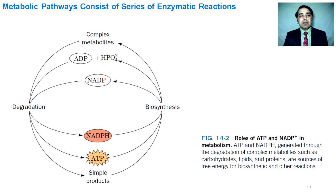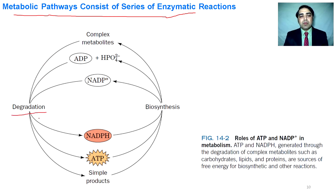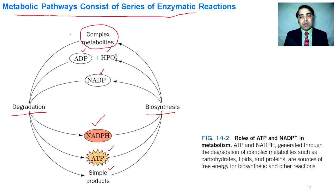Metabolic pathways consist of series of enzymatic reactions. Whatever we eat is degraded to make simple molecules, and during degradation, high-energy molecules are formed like NADPH and ATP. Some simple products are also formed. These energy molecules and simple products are utilized during biosynthetic processes and are converted into ADP, hydrogen phosphate, and NAD+, and complex molecules are generated to sustain life and build our body.